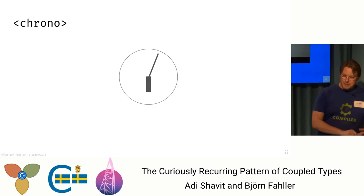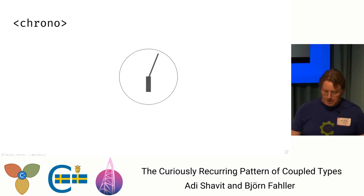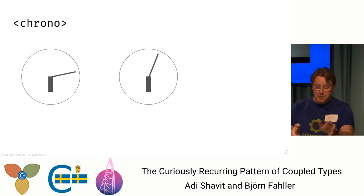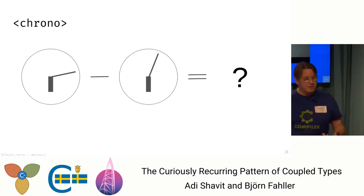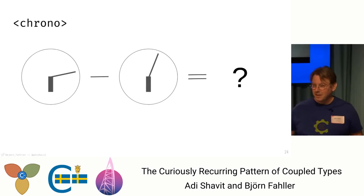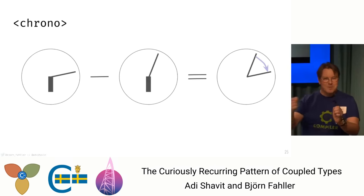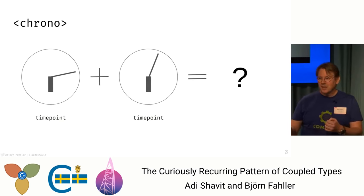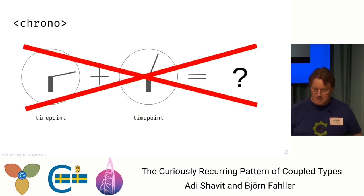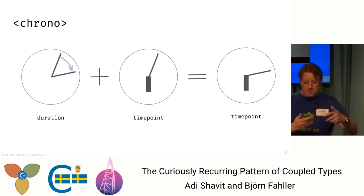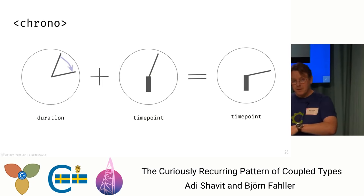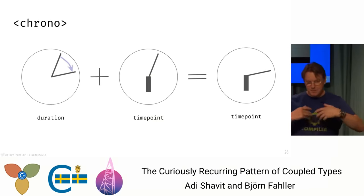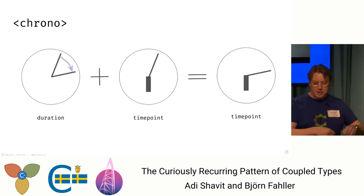The chrono library from the C++ standard library — this extremely ugly construction is a clock time point. We have two points in time represented by clock time points. If we subtract them, what do we get? A duration — exactly. It's the amount of time that has passed between these two time points. Can we add time points? No, doesn't make sense. And we can add a duration to a time point to get another time point. Does that ring familiar with the vector example? We have points in space, or in this case points in time, and vectors in space or durations in time.